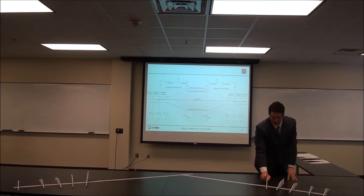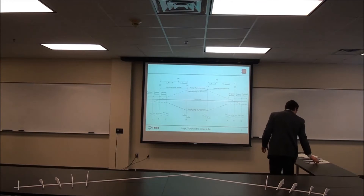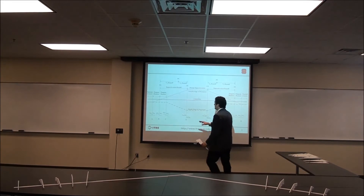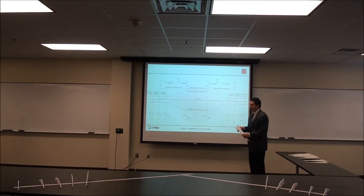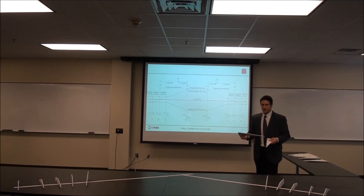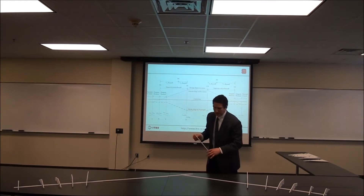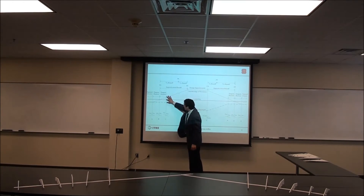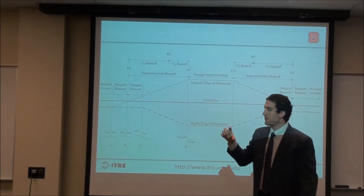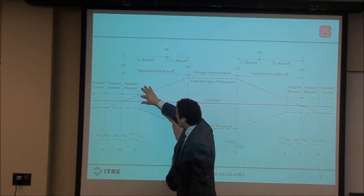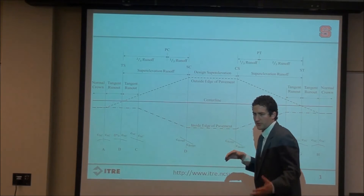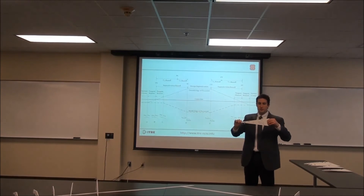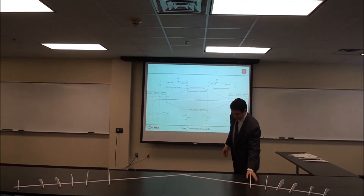Continuing with another incremental step along the curve, we then reach reverse crown, which is 2% on both sides of the road. This is point C coming into the curve and point F going out, as shown in the drawing. At reverse crown, the entire roadway is sloped at 2%. The inside edge of pavement is the same distance below the center line as the outside edge is above it, so the center line is split in the middle with 2% across the lane widths.